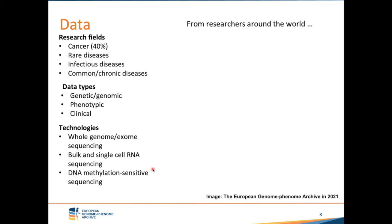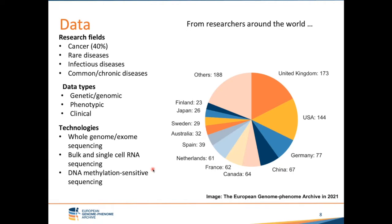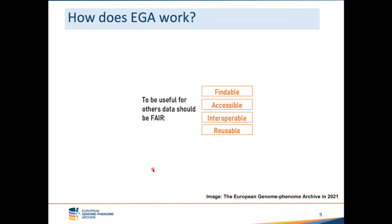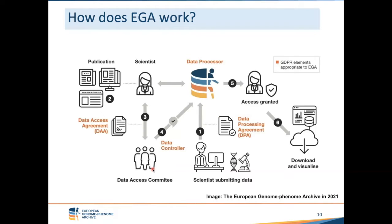All this data comes from studies from all around the world. Most submitters are from the United Kingdom, USA, Germany, China, Canada, France, Netherlands, Spain, Australia, Sweden, Japan, and Finland, but EGA accepts data from all over the world. For data to be useful, it has to be FAIR — findable, accessible, interoperable, and reusable — and to improve fairness on human research data, EGA services include data submission, discovery, and access to the global research community.